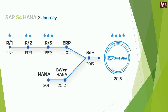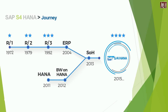Let's look at the SAP S4 HANA journey map. SAP started their journey from 1972. The first footprint of SAP on the globe was in 1972 with the R/1 application, which is the first generation of SAP. In 1979, SAP introduced the R/2 application, commonly known as the second generation. The third generation was introduced in 1992 as R/3, where R means real-time and the 3 represents three different layers of architecture.